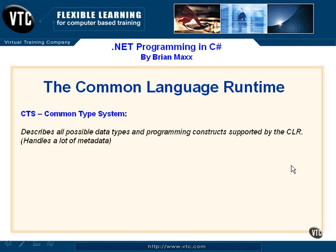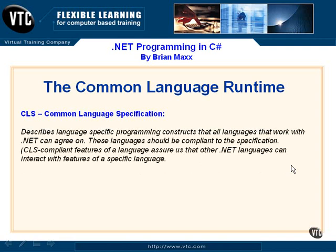The Common Language Specification is the third part. It describes the language-specific programming constructs that all .NET languages can agree on. You might see the term 'CLS compliant' — this means that features of that language can be understood and interact with other languages. You don't necessarily need to use the same language when programming; you can bring different languages and modules together and everything can interact very nicely.